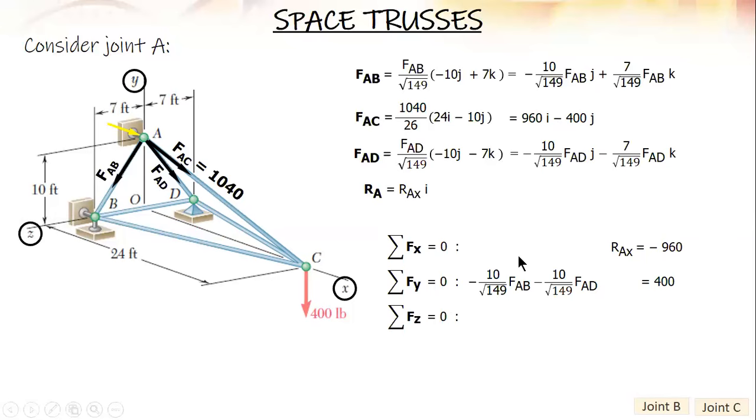The last one, summation of forces Z equal to zero. You can use the calculator to make it easier, but if you want to do it manually using method of elimination, like in the first condition RAX equals negative 960, that's very obvious. For the other two, you can use method of elimination if you want. Three equations will be reduced to two equations with two unknowns.